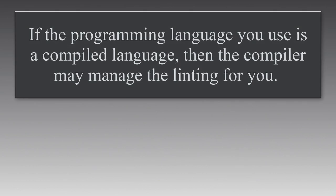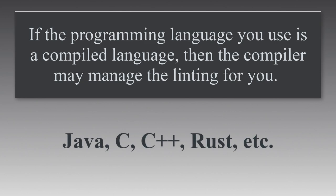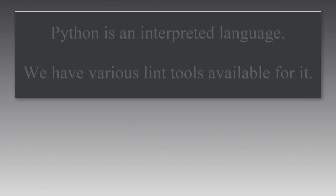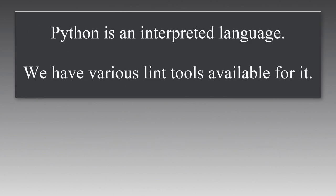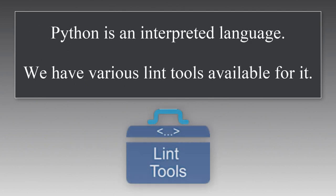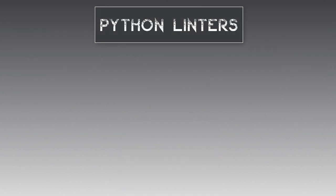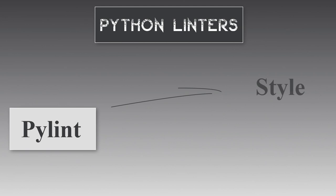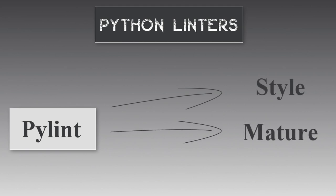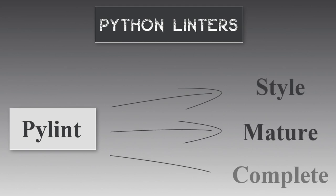If the programming language is used as a compiled language, then the compiler may manage the linting for you. Python is an interpreted language, so we have various lint tools available for it. PyLint is a linter for checking style and is one of the oldest and most mature Python linters. It can be a bit slower than some of the other linters, but it's very complete.